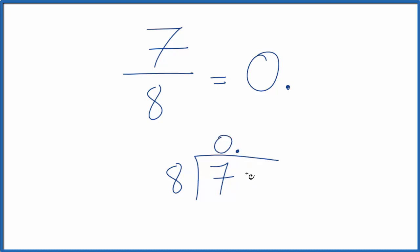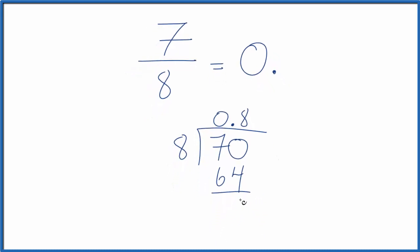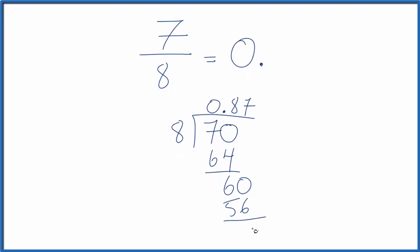And so we can put 70. Eight times eight, that's 64. 70 minus 64 is six. So we could put 60 here — we're moving over a decimal point. Eight goes into 60. Seven times eight, that's 56. That leaves us with four.